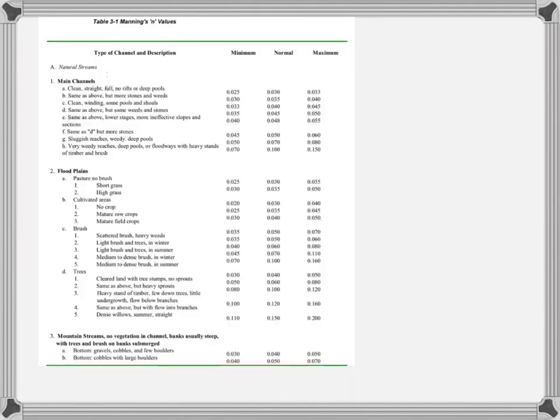The Manning's roughness, or N, has been determined through field and laboratory testing. There are many different sources that have been published about roughness values for open channel hydraulics. The best known source in open channel hydraulics has been Venti Chao in 1959.